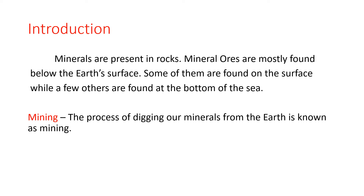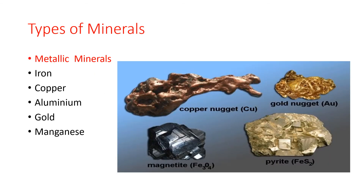Types of minerals: the earth's crust comprises both metallic and non-metallic minerals. Metallic minerals contain metal. The metal is present in raw form, meaning it contains impurities and needs to be processed in order to yield the pure metal. Metallic minerals are generally found in igneous rocks and metamorphic rocks in plateaus.